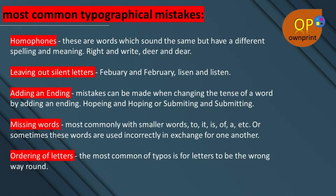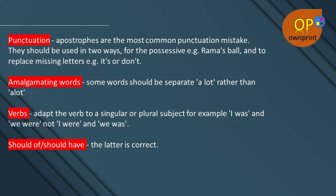Ordering of letters: the most common typo is for letters to be the wrong way around. Punctuation: apostrophes are the most common punctuation mistake. They should be used in two ways — for possessives (e.g., 'Rama's ball') and to replace missing letters (e.g., 'it's' or 'don't'). Amalgamating words: some words should be separate, such as 'a lot' rather than 'alot.' Verbs: adapt the verb to a singular or plural subject, for example 'I was' and 'we were,' not 'I were' and 'we was.' 'Should of' vs. 'should have' — the latter is correct.